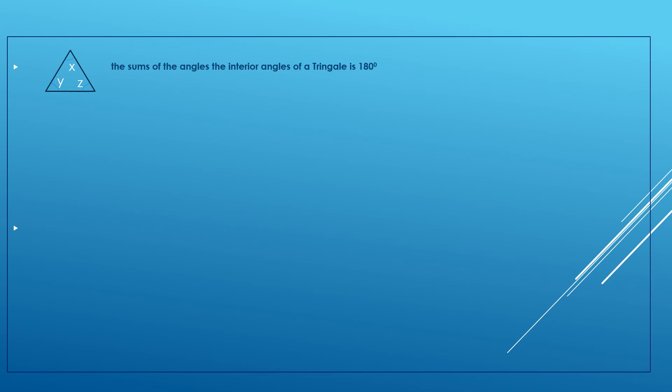Okay, here we are going to show you what we are going to do. Let's take a look at the triangle. The first angle of the triangle is the first angle. The inverse angle of the triangle is the second angle. The sum of the interior angles of the triangle is always 180 degrees.